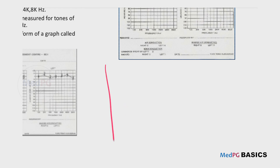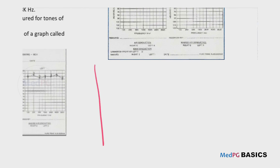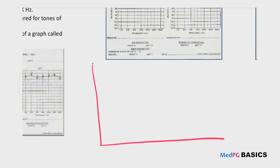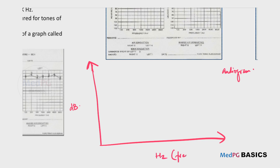This is a graph of a pure tone audiometer and this is referred to as an audiogram. The graphical representation is referred to as an audiogram. Here on the Y-axis is the hearing level in decibels, and here on the X-axis we have the frequencies in hertz.